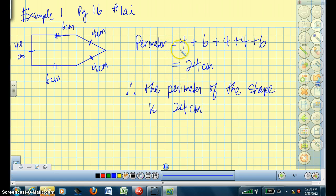So the perimeter, therefore, is 4 cm + 6 cm + 4 cm + 4 cm + 6 cm. I add up all these numbers and I get 24 centimeters. And we'll talk more about concluding statements when you do questions for assignments and tests. You should have a concluding statement. The three dots here represent the word 'therefore,' the perimeter of the shape is 24 centimeters.